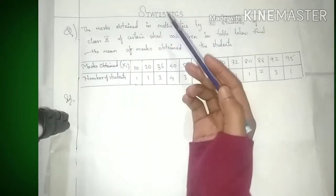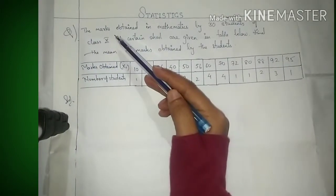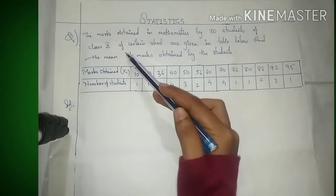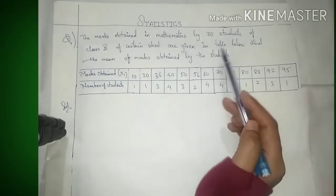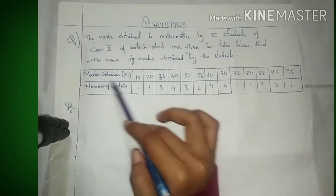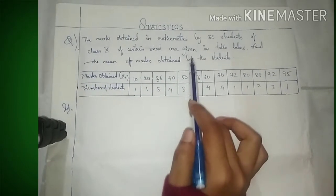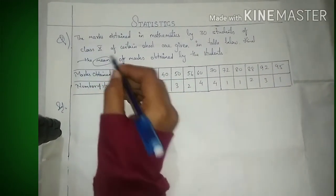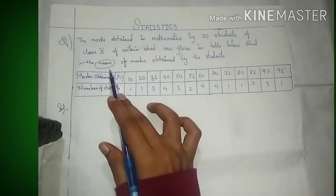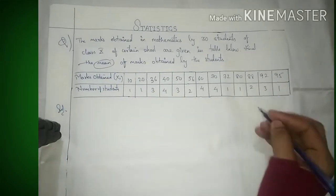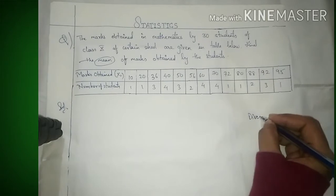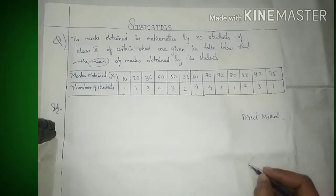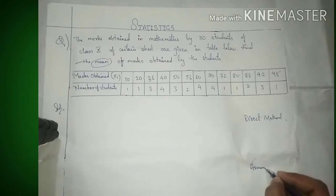Hello friends, welcome to my channel. This chapter covers a statistics question: marks obtained in mathematics by 30 students of Class 10 of a certain school are given in a table. We need to find the mean of the marks. We will solve this using three methods: Direct Method, Assumed Mean Method, and Step Deviation Method.